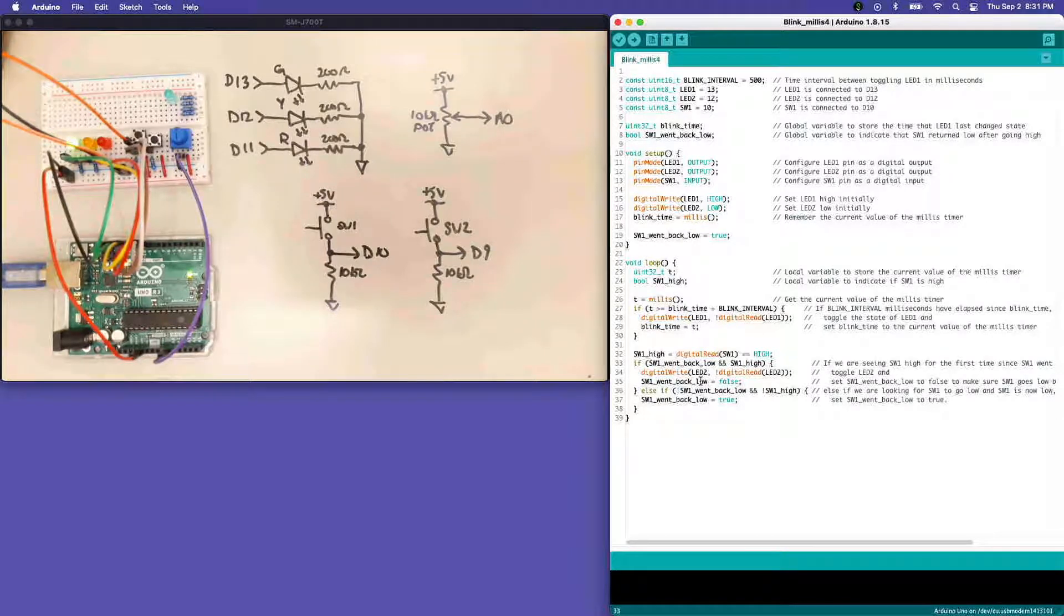That will act as a guard to make sure that on the next time around the loop here when switch one is still high, we don't immediately toggle LED two again. We have to wait until we've seen switch one go back low before we're going to toggle LED two the next time we see switch one high. Else if it's not the case that switch one went back low and it's not the case that switch one is currently high, so that means switch one is low, then we say switch one went back low gets set to true. This bit of logic allows us to turn our momentary tactile switch input into something that has some state, like a toggle switch instead of a momentary switch in effect.